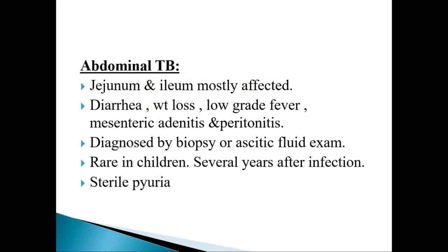Abdominal tuberculosis: the jejunum and ileum are mostly affected. The main complaints are diarrhea, weight loss, low-grade fever, mesenteric adenitis and peritonitis. It is diagnosed by biopsy or ascitic fluid examination if there is ascites. It is rare in children and occurs several years after infection.